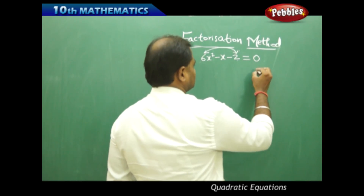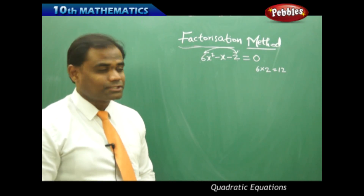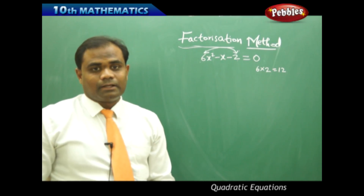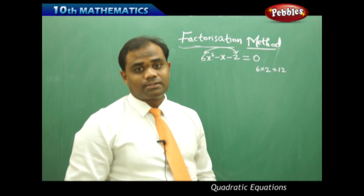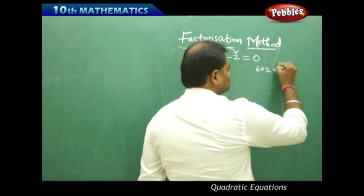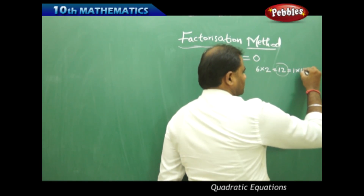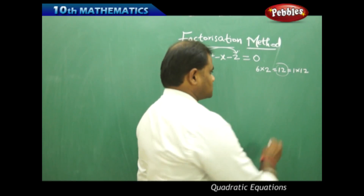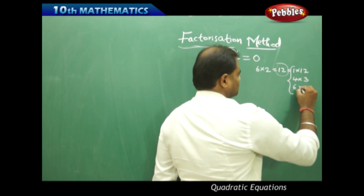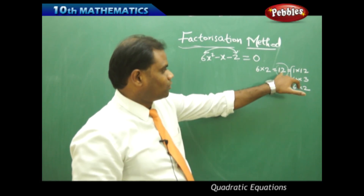I don't take the sign into consideration; I just find the factors of 12 (6 times 2). Now I identify all possible factor pairs of 12: 1 times 12, 4 times 3, and 6 times 2 are the possible factor pairs.